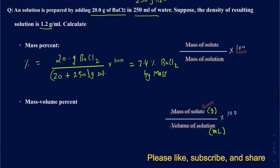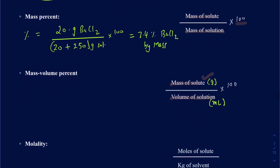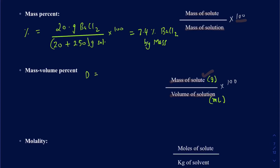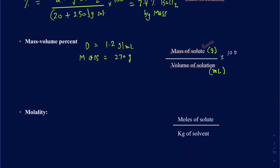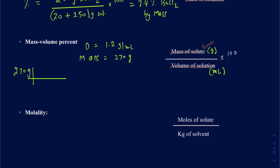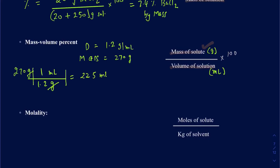We don't directly know the volume of the solution, but we do know the total mass of the solution, which is 270 grams, and the density is 1.2 grams per milliliter. Using mass and density, we can find the volume. So 270 grams divided by 1.2 grams per milliliter gives 225 milliliters for the volume of the solution.